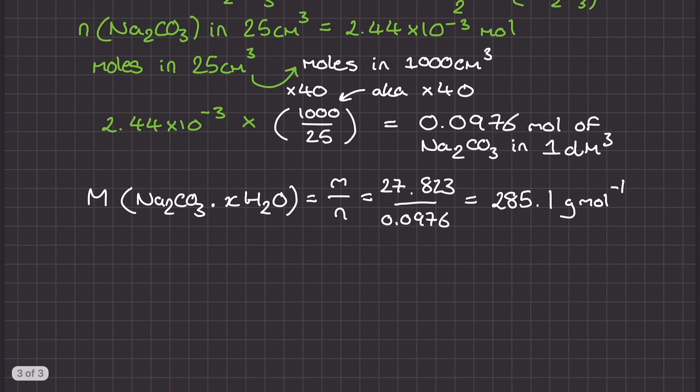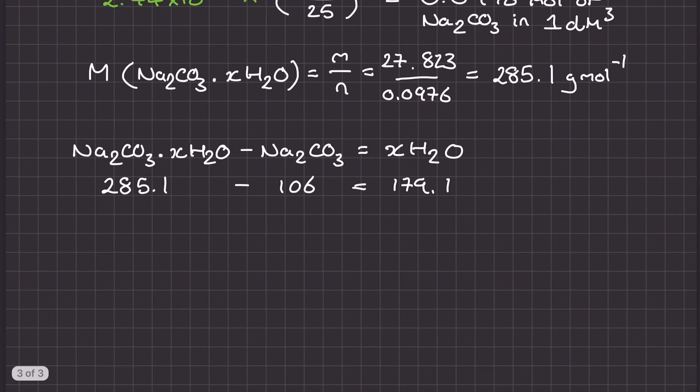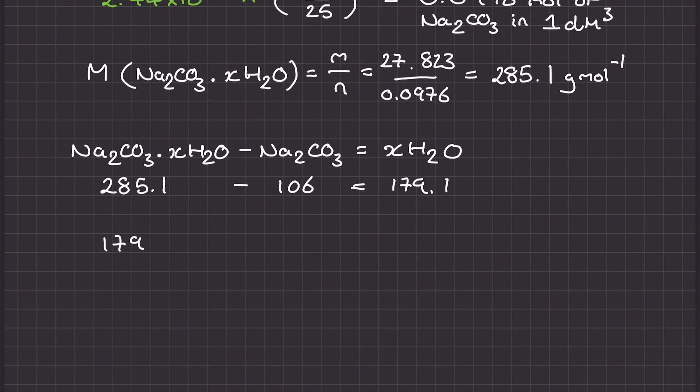This still isn't quite the value of XH2O though, is it? So what I need to do next is, since this value represents the whole formula including the dot XH2O, I can subtract from this the known molar mass using a periodic table for just the sodium carbonate, which is 106. That gives me a remaining molar mass value which must be by the XH2O of 179.1 grams per mole.